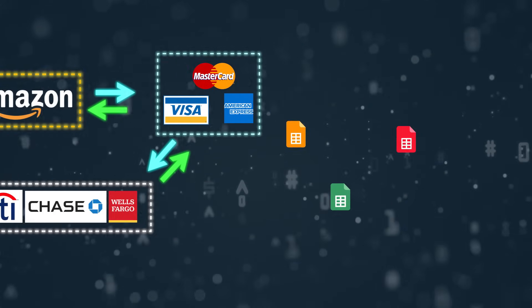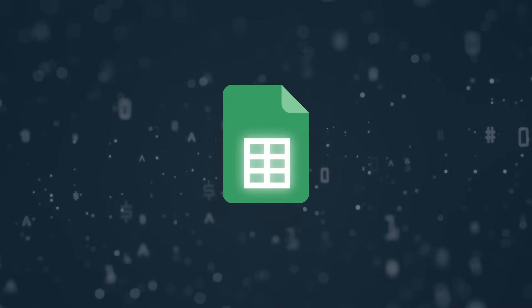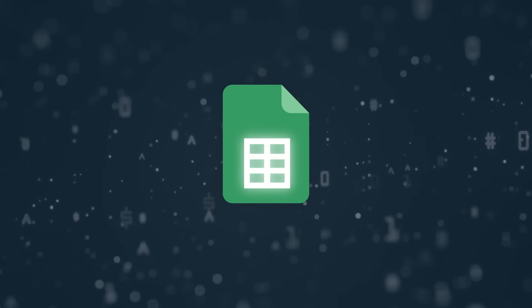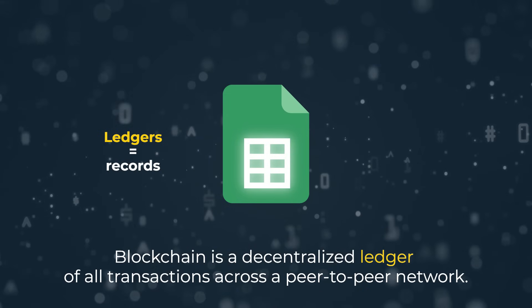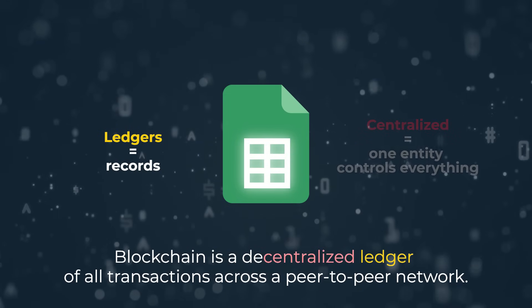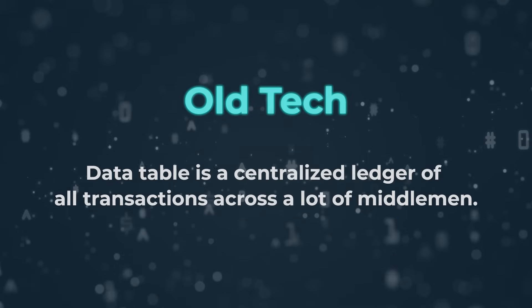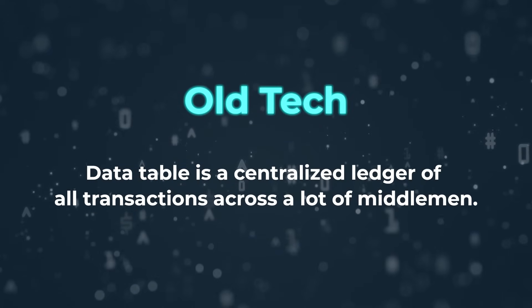Before blockchain, these data and records would often be stored in data tables. Think of it like a boring, long Excel spreadsheet. Ledgers just mean these records in spreadsheet format. And centralized just means that the companies control their own ledgers. So what we had before is a data table — a centralized ledger of all transactions across a lot of middlemen.